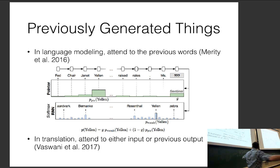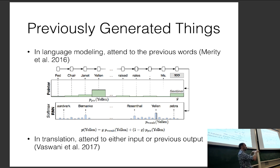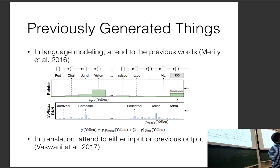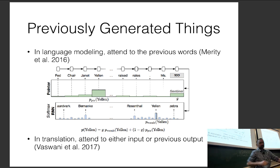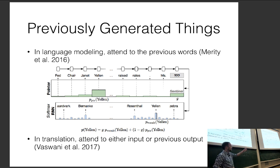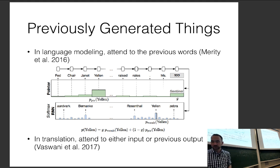Copy mechanisms and pointer networks are essentially two different names for the same thing — two different papers came out at almost exactly the same time doing almost exactly the same thing, and both became famous papers. A sentinel is similar to gating: attending to the sentinel gives you the gating probability.